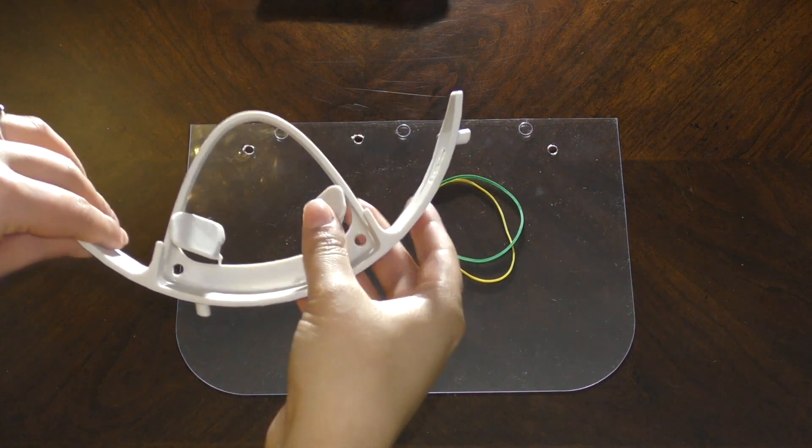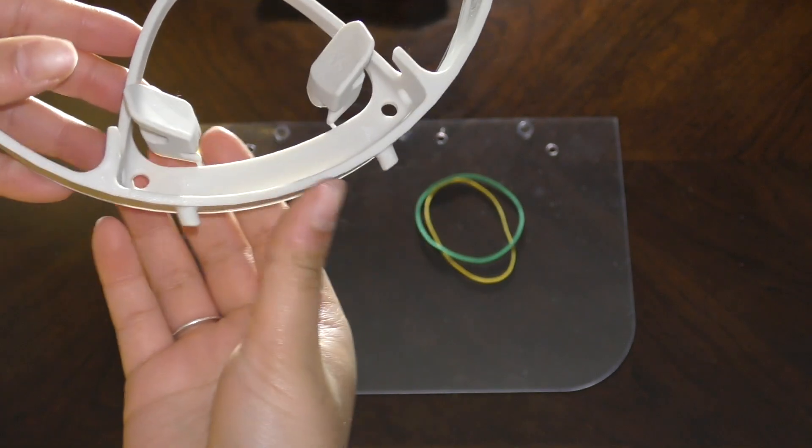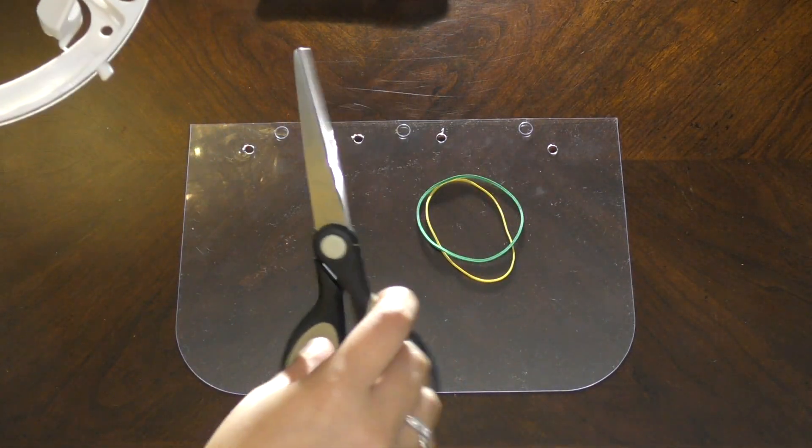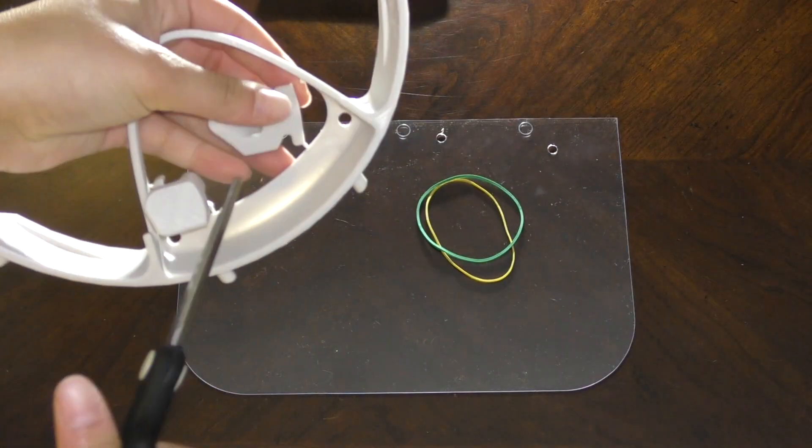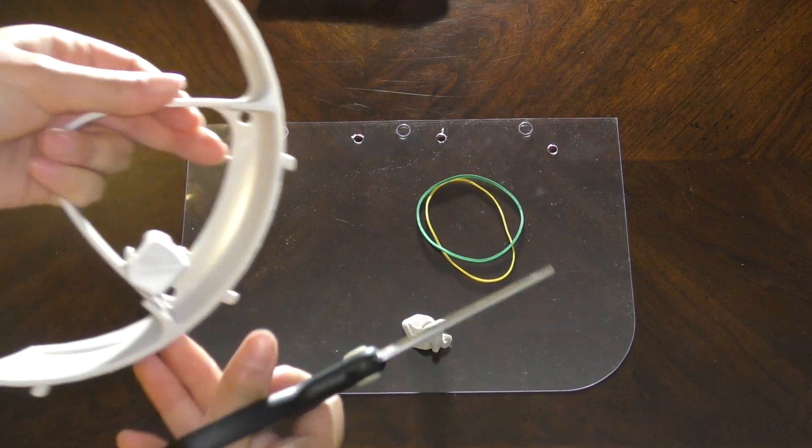So the first step in actually assembling the face shield is to cut the clips off. For this you're going to need a pair of scissors and you're just going to cut the small plastic parts to remove the clips from the base.